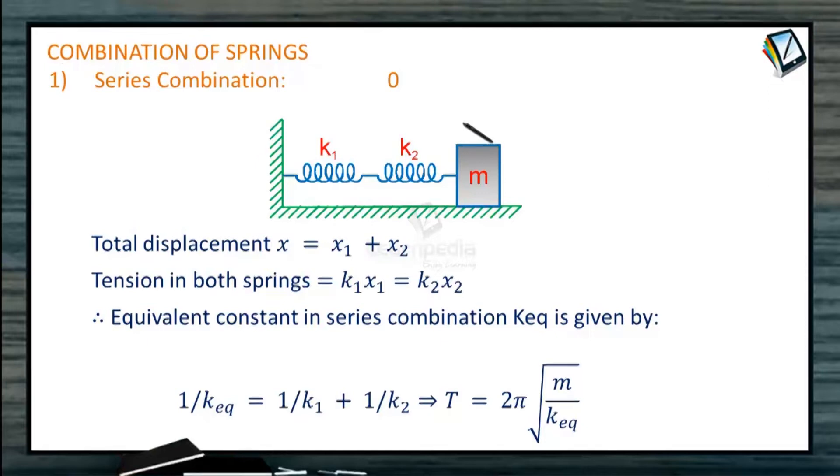So let's start with combination of the springs. In case of springs, series combination means one spring is connected after the other. So let us fix this boundary and apply a force F at one of the ends of the spring having force constant K1.